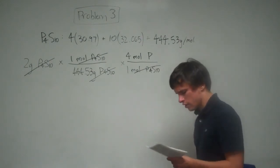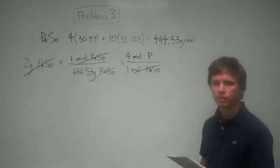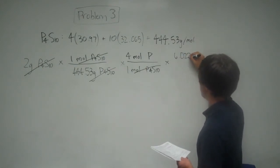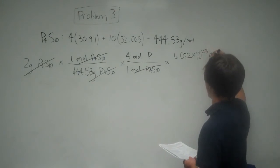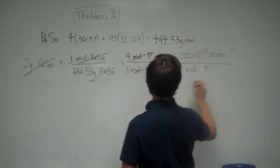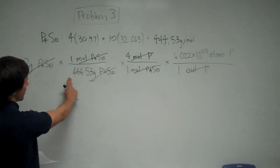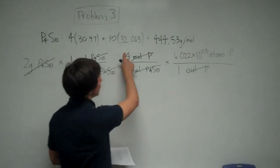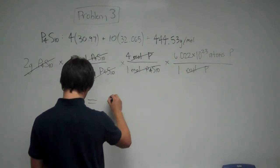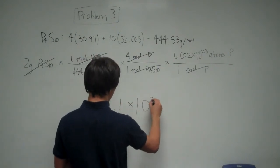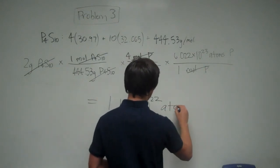So we're up to moles of phosphorus. How do we go from moles to atoms? We can use Avogadro's number. So we have 6.022 times 10 to the 23 atoms of P per 1 mole of P. Once again, the moles of P cancel out, and we're going to be left with atoms of phosphorus. So we have 2 divided by 444.53 times 4 times Avogadro's number. And you're going to get 1.1 times 10 to the 22 atoms of P.